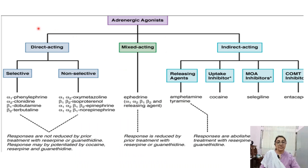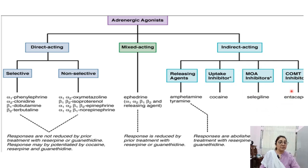Classification of adrenergic agonists: directly acting drugs that selectively act on alpha-1 receptor include phenylephrine; alpha-2 receptor: clonidine; beta-1: dopamine; beta-2: salbutamol. Non-selective drugs: alpha-1 and alpha-2: oxymetazoline; beta-1 and beta-2: isoprenaline; alpha-1, alpha-2, beta-1, beta-2: epinephrine; alpha-1, alpha-2, and beta-1: norepinephrine. Indirectly acting drugs — releasing agents: amphetamine and tyramine; uptake inhibitor: cocaine; MAO inhibitor: selegiline; COMT inhibitor: entacapone.